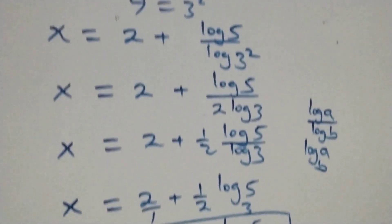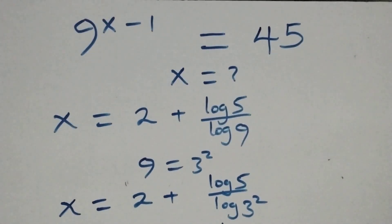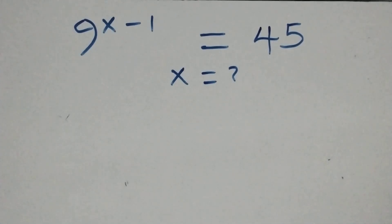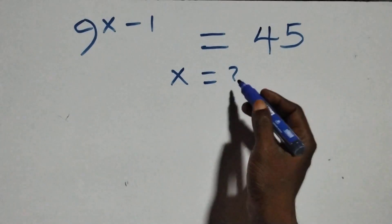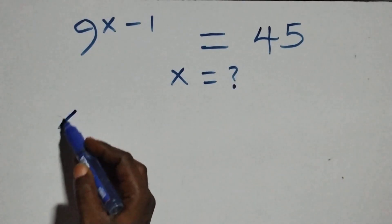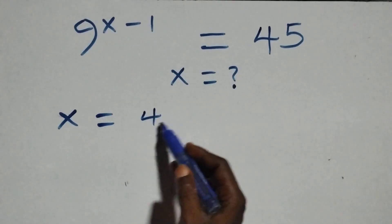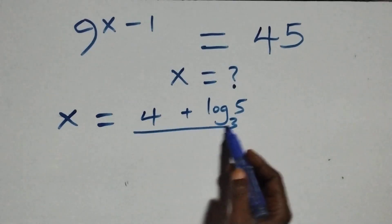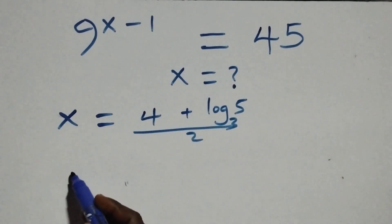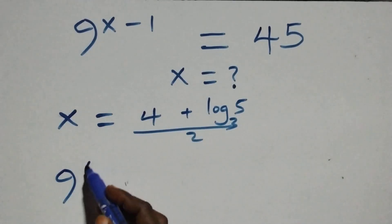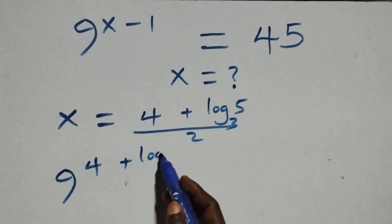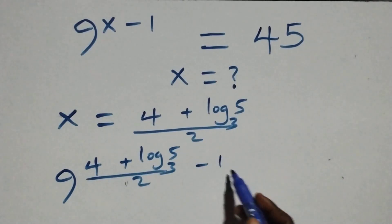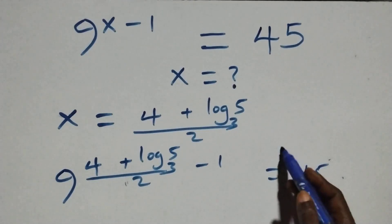Let's check if this satisfies the given problem. We substitute the value of x, which is (4 plus log 5 base 3) all over 2, and what we have becomes 9 raised to power (4 plus log 5 base 3) all over 2, minus 1, equals 45.